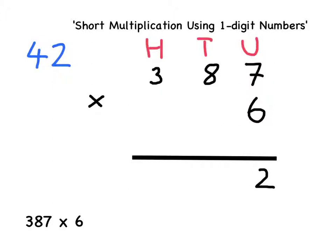I must instead write the 2 from the units down here as part of my answer, and the 4 from the 40 must be written here. This will then become important for the next part of the multiplication.